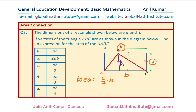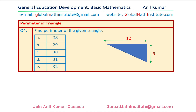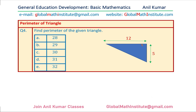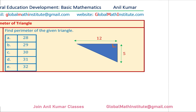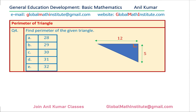The next question is related to the perimeter of a triangle. Find the perimeter of the given right triangle, in which one of the legs is 5 and the other is 12. To find the perimeter, we have to add all three sides, so let us first find the hypotenuse.